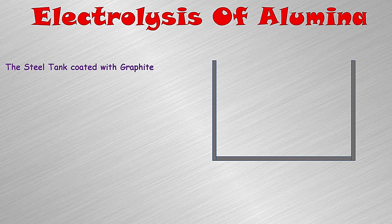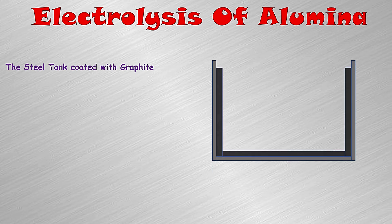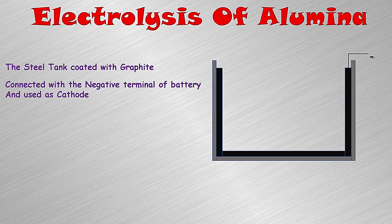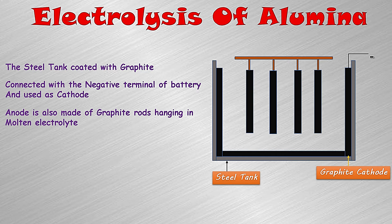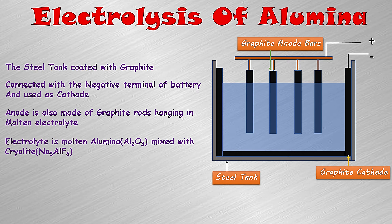This aluminium oxide is then treated in an electrolytic cell — the process is known as electrolysis of alumina. This process is carried out in a steel tank coated with graphite. The graphite coating is connected with the negative terminal of the battery, so it acts as the cathode. The anode is also made up of graphite in the form of graphite rods, which hang in the molten electrolyte solution and are connected with the positive terminal of the battery, so they act as the anode.